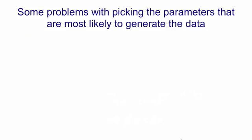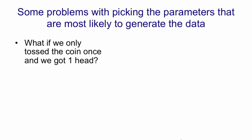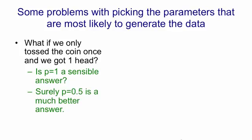But there's some problems with using maximum likelihood to decide on the parameters of a model. Suppose, for example, we only tossed the coin once and we got one head. It doesn't really make sense to say we think the probability of the coin coming down heads in future is 1. That would mean we'd be willing to bet at infinite odds that it can't come down tails, and that seems ridiculous. It's sort of intuitively obvious that a much better answer is 0.5, but how can we justify that?